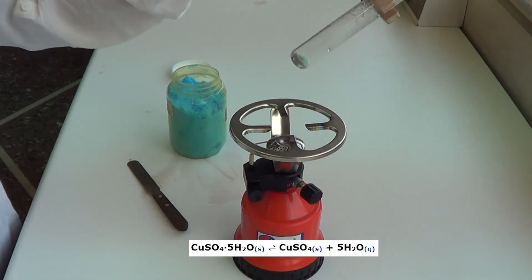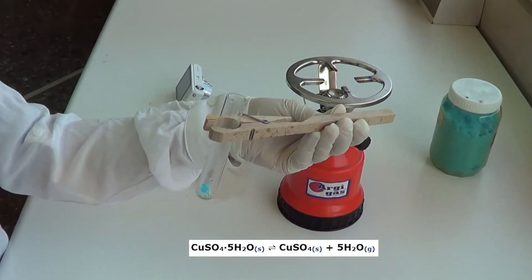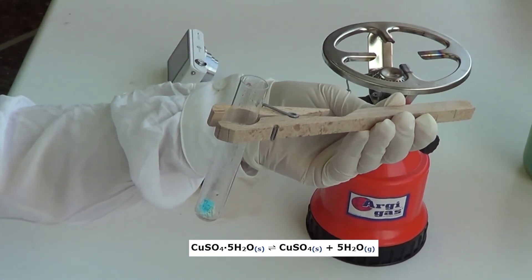Then we remove the test tube from the flame. In a few minutes, we observe the color of the copper sulfate turn back to blue.